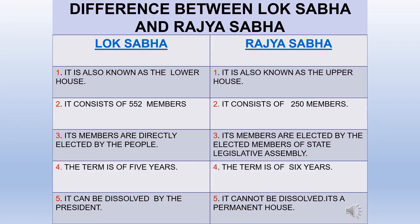Now let us see the difference between Lok Sabha and Rajya Sabha in a tabular form. Lok Sabha is the lower house with 552 members, directly elected by the people, with a term of 5 years. Rajya Sabha is the upper house with 250 members, elected by the elected members of the State Legislative Assembly, with a term of 6 years. Rajya Sabha cannot be dissolved — it is a permanent house. Lok Sabha is more powerful than Rajya Sabha.